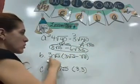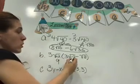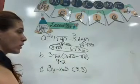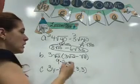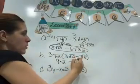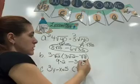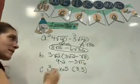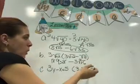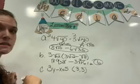For part b: 3 times 3 is 9, then square root of 2 times square root of 2 is just 2 — remember, it ends up being square root of 4, and square root of 4 is 2. So that's 18 minus 3 times 1 is 3, square root of 2 times square root of 8 is square root of 16. Square root of 16 is 4, so 4 times 3 is 12. 18 minus 12 is 6. That's how you get the answer 6.